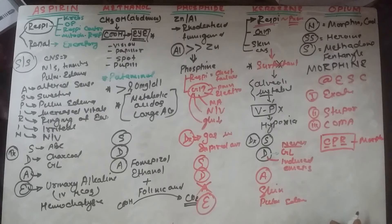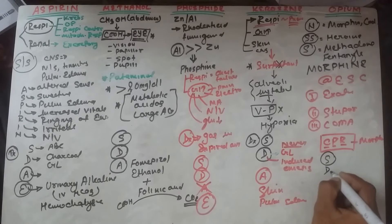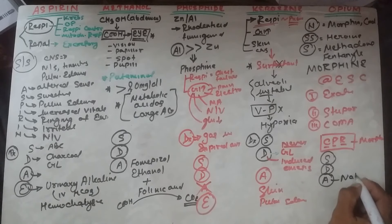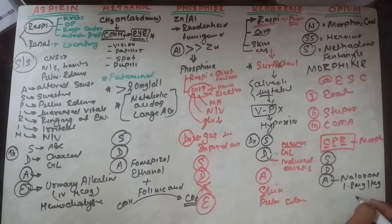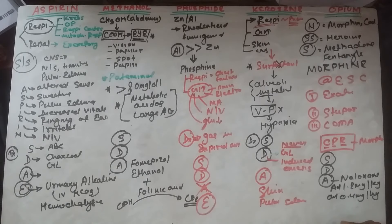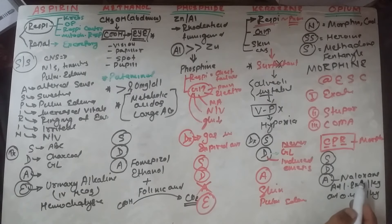Treatment for opium poisoning: after stabilization and decontamination, the antidote is naloxone. The dose of naloxone is 1.2 mg/kg in adults and 0.4 mg/kg in children.